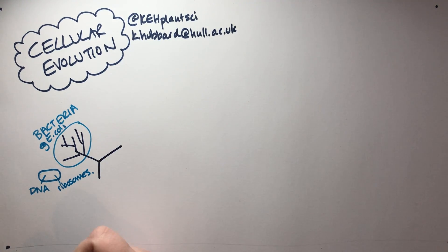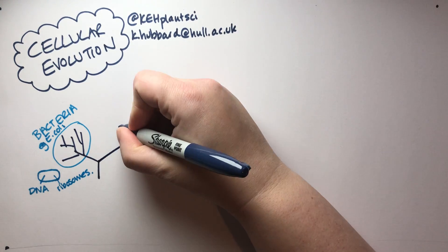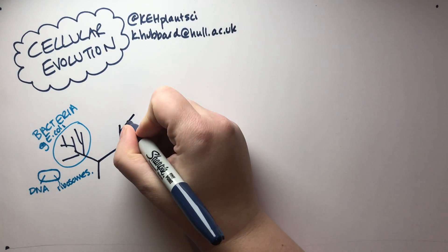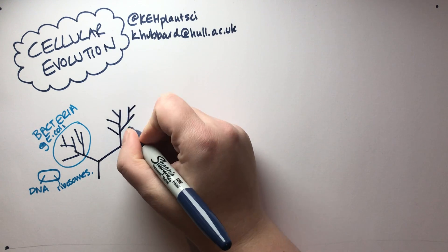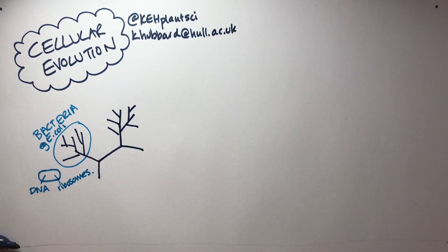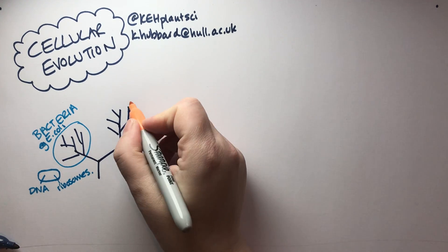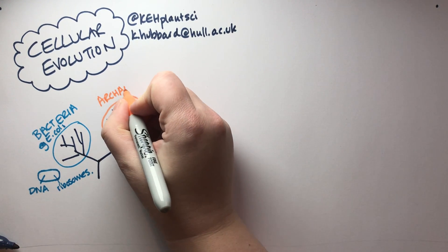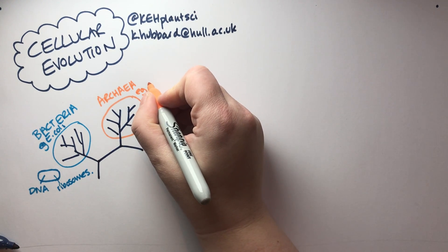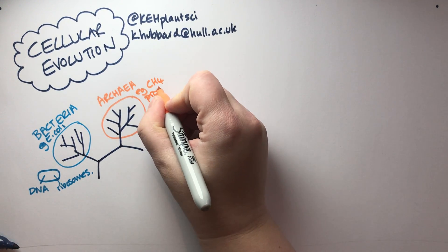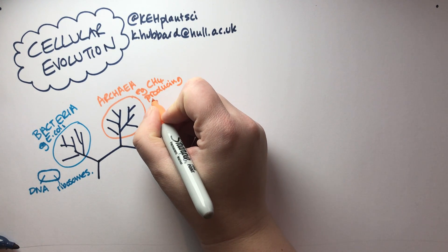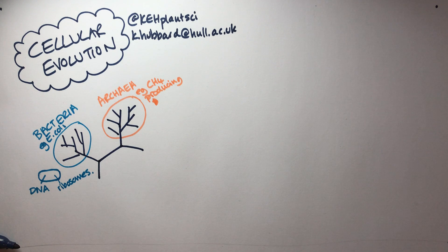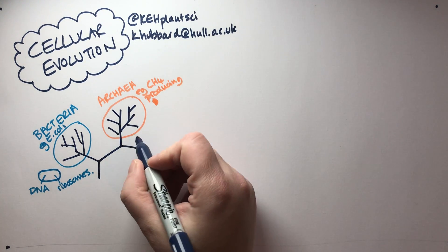Then we have two other domains which are more closely related to each other than they are to the bacteria, so the tree forks like this. We've got another great domain or kingdom of life which you may or may not have heard of before — the archaea. They might include methane-producing bacteria found in cow stomachs, or they were originally discovered as organisms that live on the hydrothermal vents at the bottom of the sea.